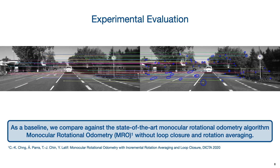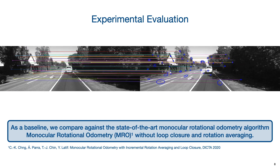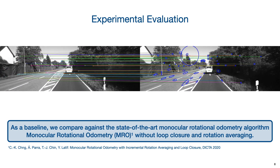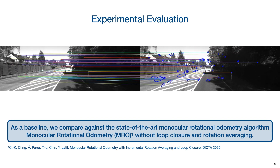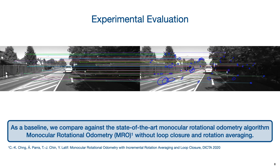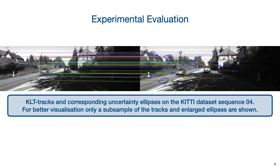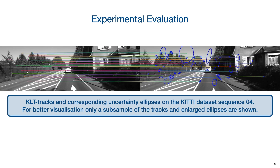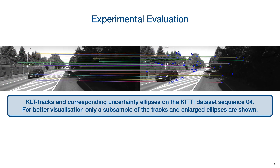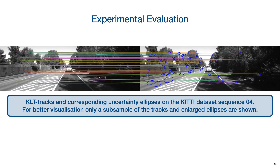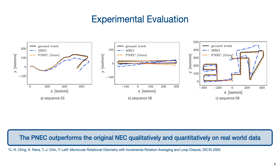The PNEC also shows significant improvement when incorporated into a visual odometry system. We compare the baseline MRO using the NEC without loop closure or rotation averaging, KLT-NEC which replaces the AWP features used by MRO with KLT tracks, and KLT-PNEC which also incorporates uncertainty information provided by KLT tracking. An evaluation on the real-world KITTI dataset shows that the PNEC outperforms the original NEC even when not provided with ground truth covariance matrices but rather estimated ones provided by KLT tracking.